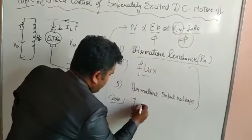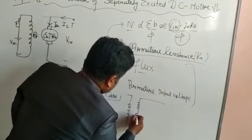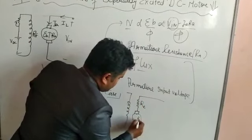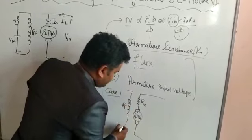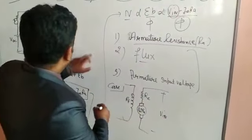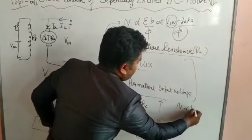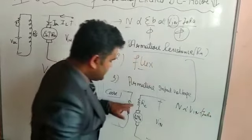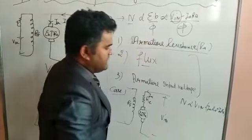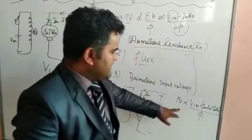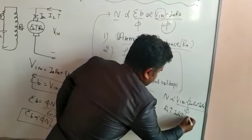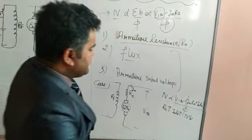Now let me draw the circuit again. Here I have drawn the external resistance R_E in series, the armature resistance R_A, the back EMF E_B, and field resistance R_F. We have given supply V_in. As you see from the equation, speed = (V_in minus I_A·R_A) / φ. Now the external resistance R_E is added, so instead of I_A·R_A, it becomes I_A·(R_A + R_E). When R_A increases, I_A·R_A increases, therefore speed decreases.